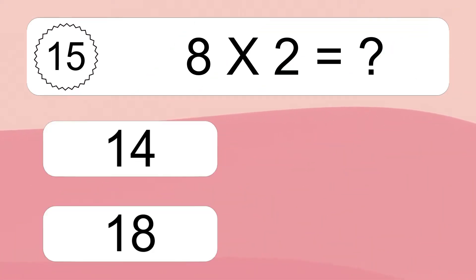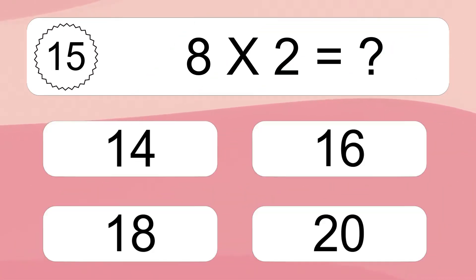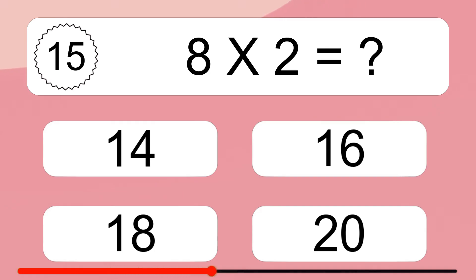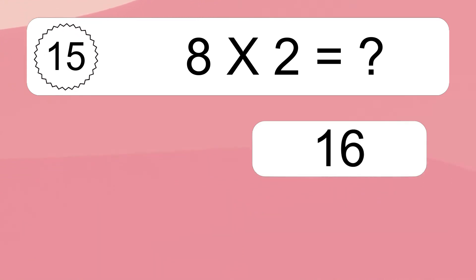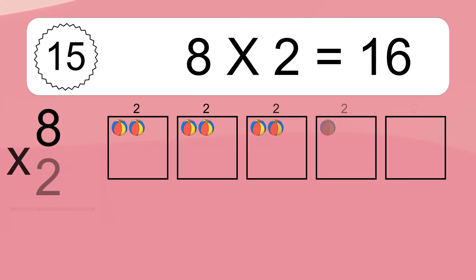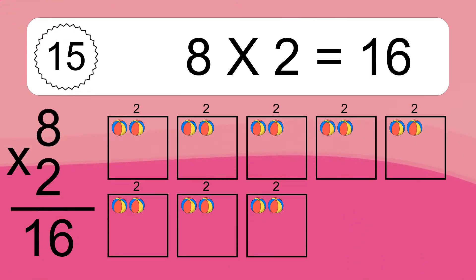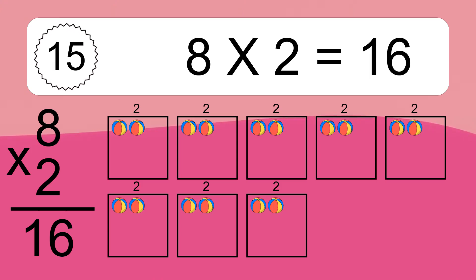8 times 2 equals what? 8 times 2 equals 16. We have 8 boxes and each box has 2 colorful balls inside. If you count all the balls in all the boxes together, you will have 8 times 2 balls.